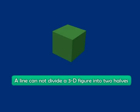In fact, no three-dimensional figure can be divided into two equal halves by a line. So if not a line, then what do we have?